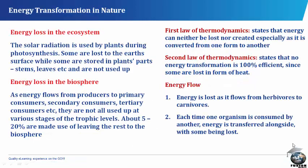Energy Loss in the Ecosystem. The solar radiation is used by plants during photosynthesis. Some are lost to the earth's surface, while some are stored in plant parts — that is, stems, leaves, etc. — and are not used up.